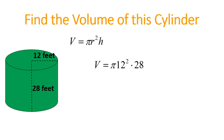In this case, our radius is 12. So we plug that in, 12 for radius. And our height is the distance between the two circles, and that is 28. 12 squared is 144. 144 times 28 is 4032. Now we have the exact volume.